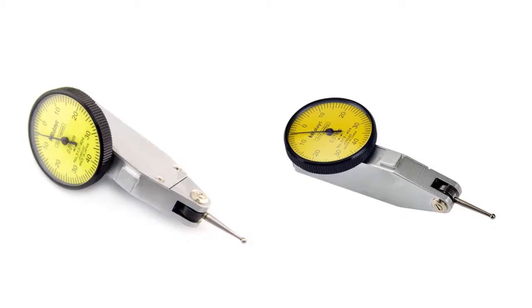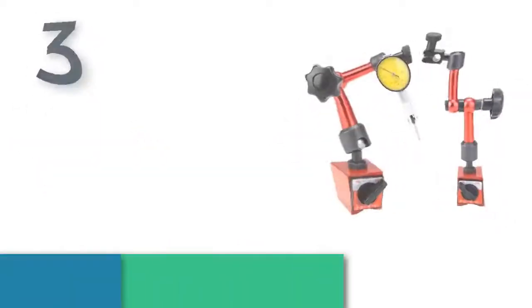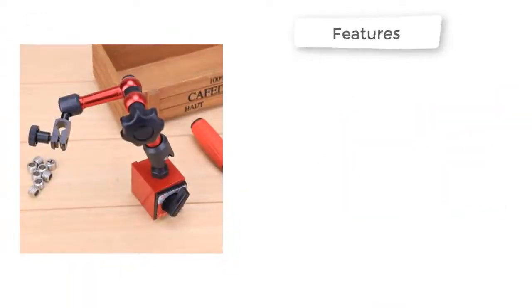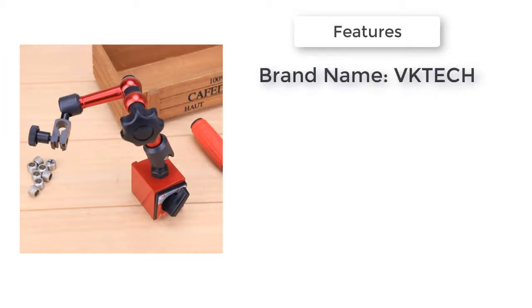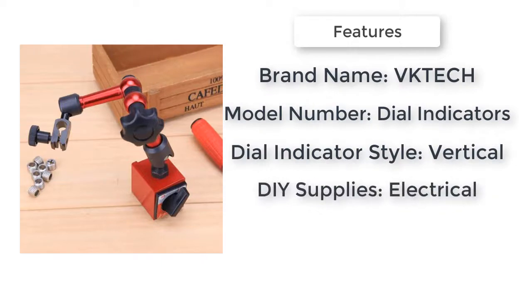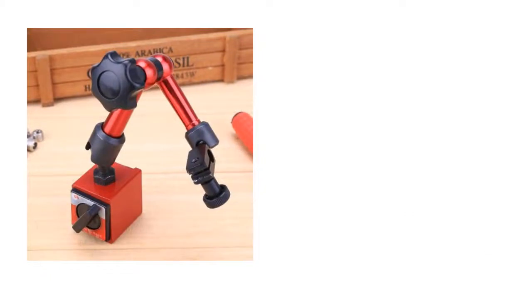The item number three is zero to 0.8 millimeters high precision lever. Brand name DIY supplies electrical, max measuring range zero to 0.08 millimeters, dial indicator style vertical, display type analog, accuracy 0.01 millimeters.